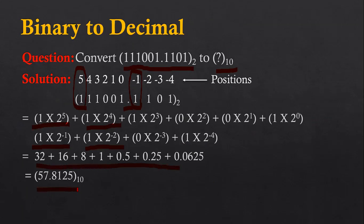The final outcome is 57.8125. So 111001.1101 is a binary number and its decimal equivalent is 57.8125.